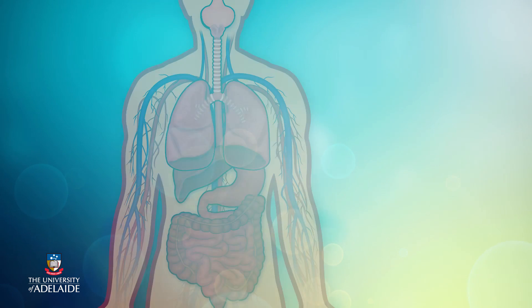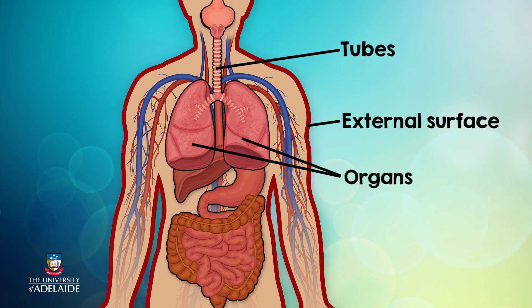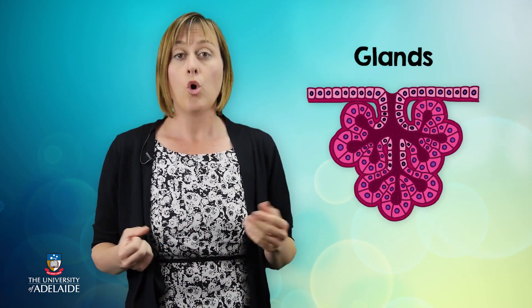So far this week we've explored the structure and function of membranous epithelium. Just a reminder that membranous epithelium covers and lines the external surface of our body and lines all internal cavities, organs, tubes and passageways. However, there's another type of epithelium present in our body, known as glandular epithelium.